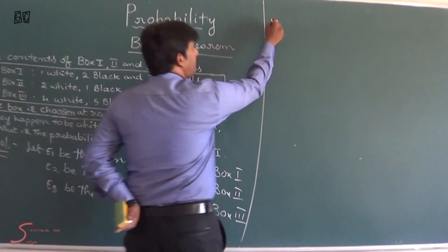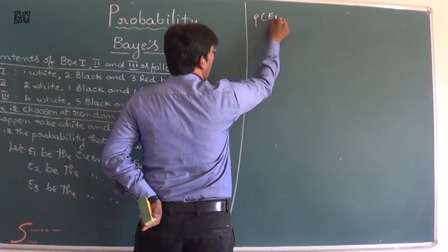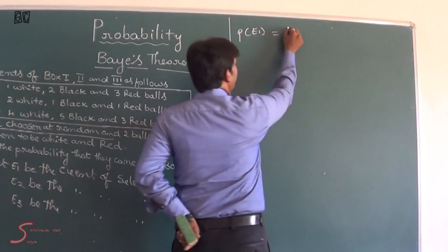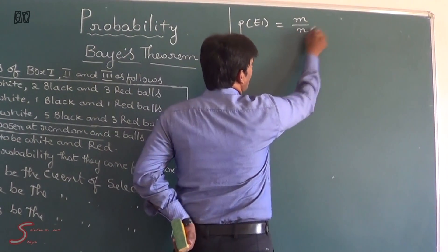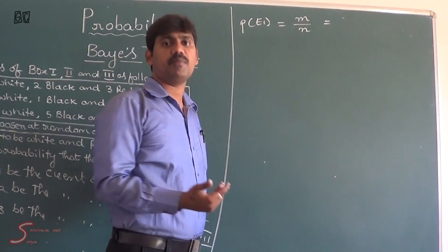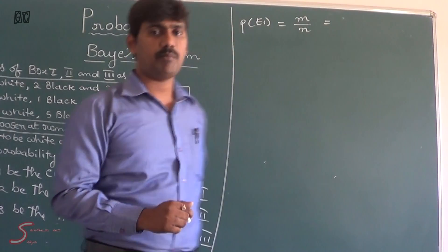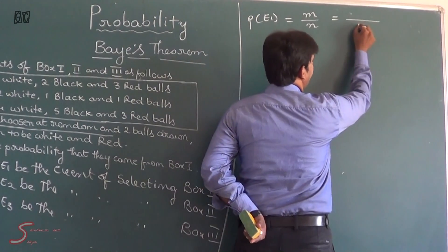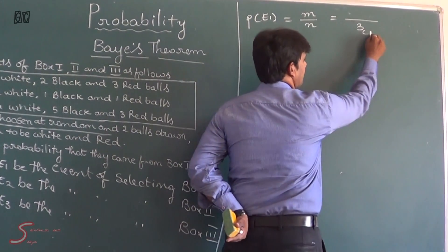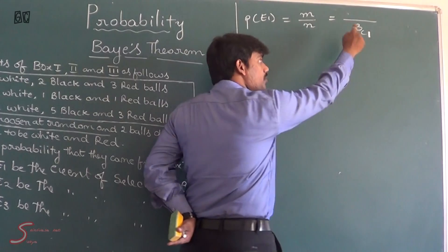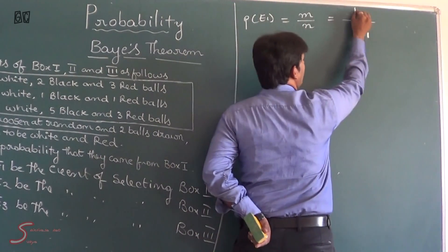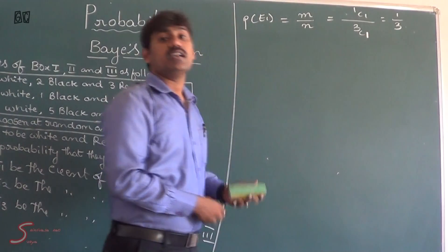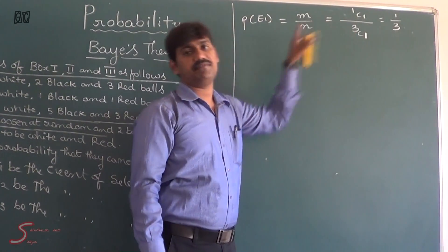Now I am going to write the probability of each event — the probability of selecting boxes. The formula for probability is M by N, that is favorable number of cases by total number of cases. We have three boxes, and out of three boxes I am going to select one box — that box should be box 1 only, which is 1C1. So the value of P(E1) is 1 by 3.